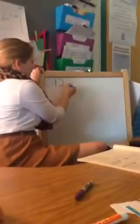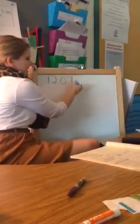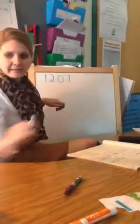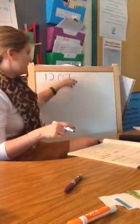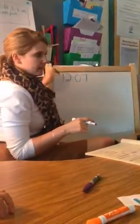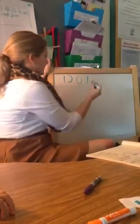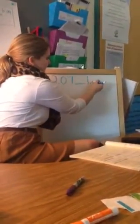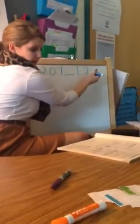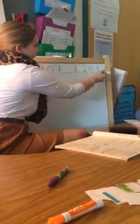Next, we're going to compare 12 and 7 hundredths. You write it. 12 and 7 hundredths. And we're comparing it to 1 and 207 thousandths.